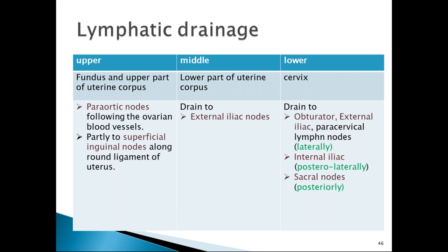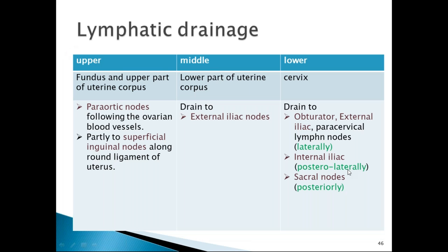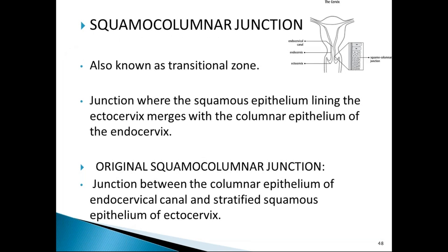The upper part of the uterus and fundus drain into para-aortic nodes following the ovarian vessels, and partly to superficial inguinal nodes through the round ligament. The lower part of the body of the uterus drains into external iliac nodes. The cervix has a special lymphatic supply: posteriorly into presacral nodes, posterolaterally into internal iliac, transversely to paracervical, obturator, external iliac, and common iliac nodes. The obturator node is the sentinel node — the first node involved in cervical malignancy.